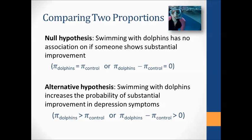The next time we did tests of significance, we were comparing two proportions. The example was with dolphins: we looked at swimming with dolphins to see if there's an association between that and showing substantial improvement in depression symptoms. The null was that dolphins have no effect — the proportion showing substantial improvement would be about the same in both groups, or the difference in those two proportions would be zero. The alternative was that swimming with dolphins would increase the probability of substantial improvement in depression symptoms, so the difference is greater than zero.